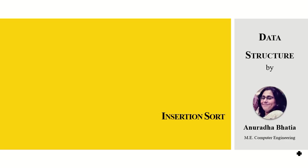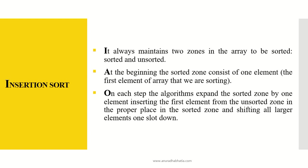Let's study one of the important sorting methods in data structures known as insertion sort. Sorting always maintains two zones in the array: one which is sorted and another which is unsorted. At the beginning, the sorted zone consists of one element — the first element of the array. On each step, the algorithm expands the sorted zone by one element, inserting the first element from the unsorted zone into its proper place in the sorted zone, and shifting larger elements one slot down.